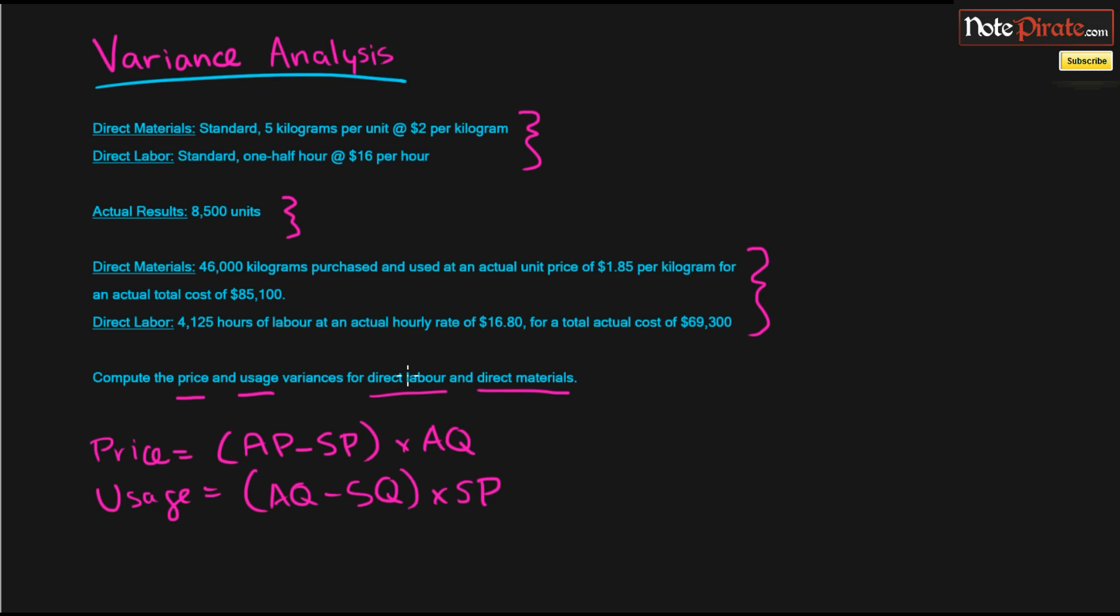Alright, so let's go ahead and start with direct labor. So let's do the price variance first, and we're going to be looking for actual prices and standard prices. So we have the actuals right here. I should put a little A here and maybe a little S here. So the actual amount for direct labor is $16.80, so we can put that there. And the standard amount is going to be right up here for direct labor, which is $16.00.